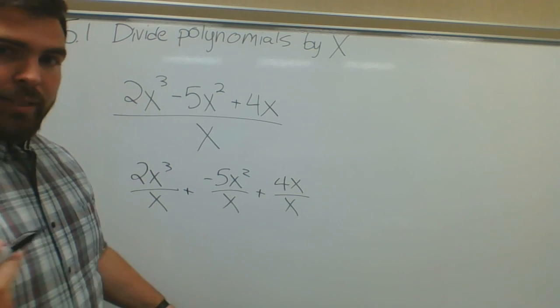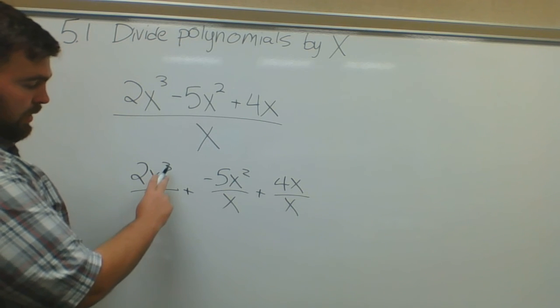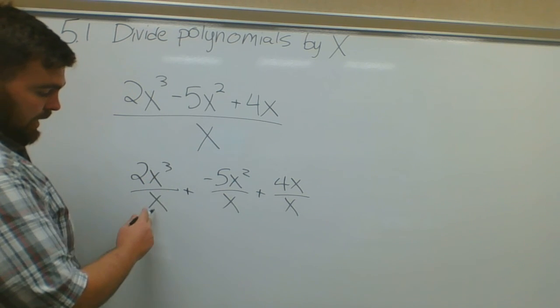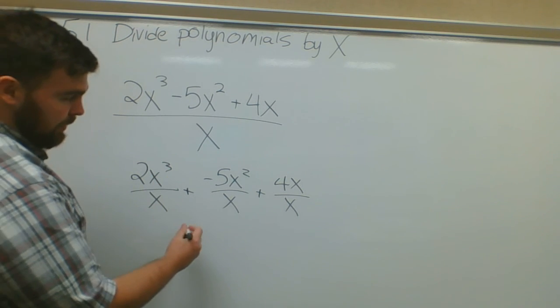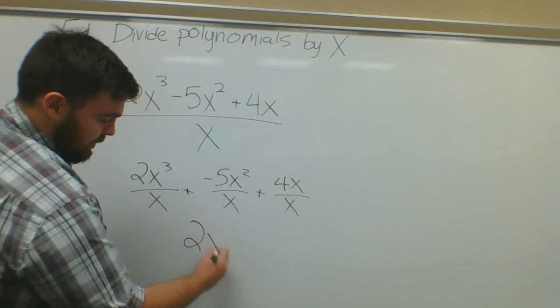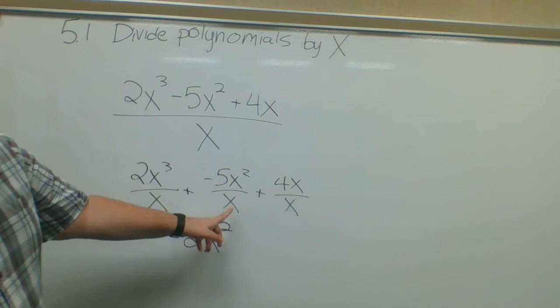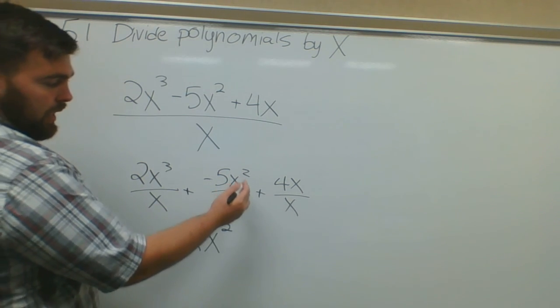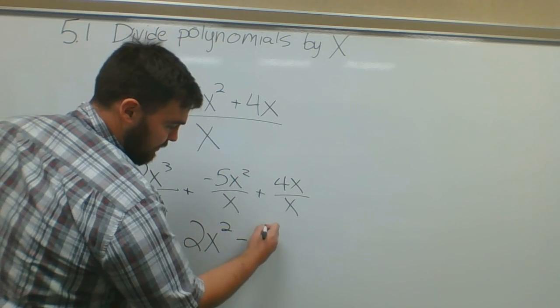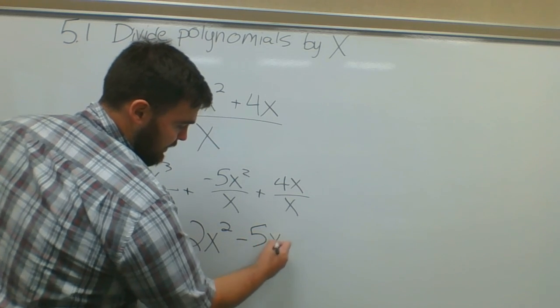One of these x's cancels out one of these x's, so I'd be left with 2x squared. Negative 5x squared over x, one of these x's would cancel out one of these x's, so minus 5x. And the same thing, 4x over x, x cancels out x, so plus 4.